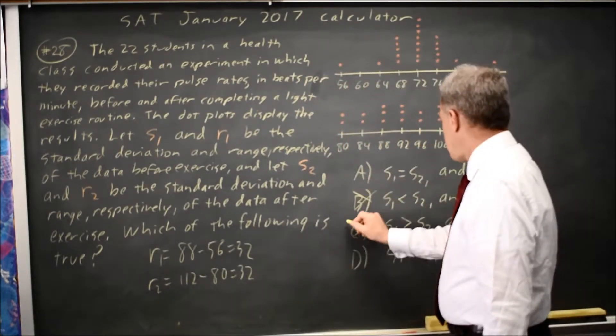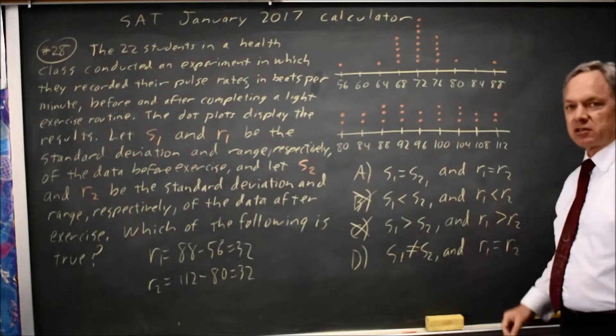So the ranges are the same, which means choices B and C are incorrect, because B and C say the ranges are different.